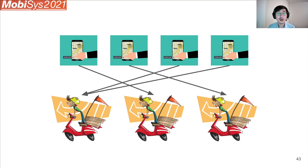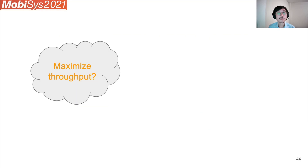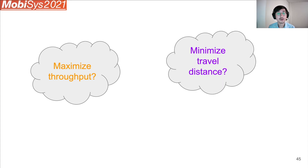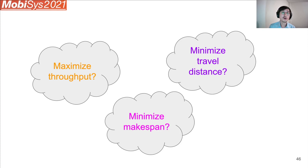When you have this kind of scheduling problem, you need an objective you're aiming for, typically in the form of maximizing or minimizing something. For example, you could schedule jobs to maximize the number of jobs finished within a given time unit — this is often referred to as throughput. You could also schedule jobs to minimize the average travel distance for your workers, or to minimize the average job completion time, which is often referred to as makespan. If you think about it, these are in some sense competing goals.